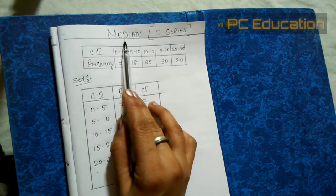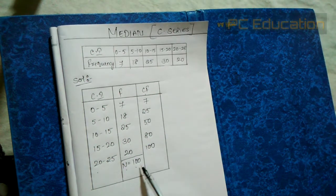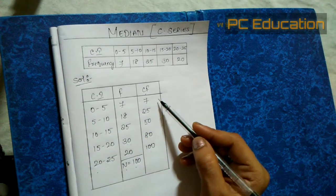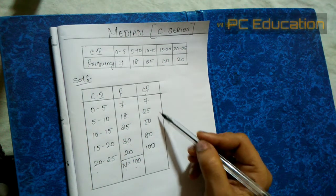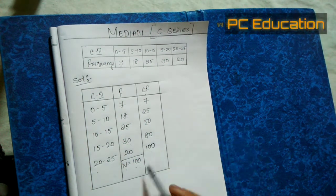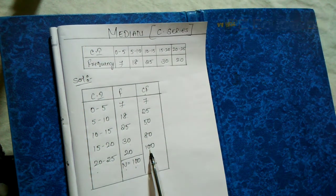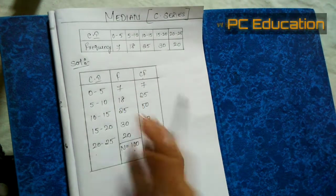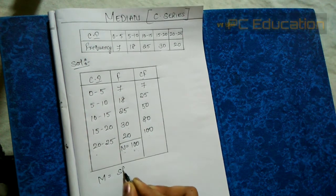One important thing to remember: whenever we calculate the median, the total of the frequency and the last value of the cumulative frequency both should be equal. This is how we verify whether our cumulative frequency calculation is correct or wrong.